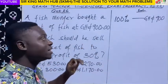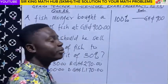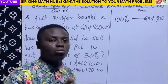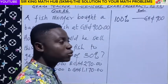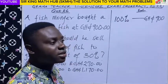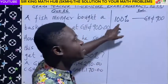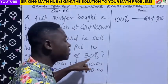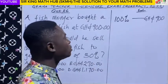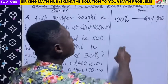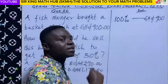We are looking for a selling price that will make this trader a profit of 30%. From our earlier analysis, the selling price has two components: the cost price and the profit. The cost price in percentage terms is 100%, and the profit in percentage terms is 30%. So what should be the selling price in terms of percentage? The selling price equals the cost price plus the profit, which is 100% plus 30%.